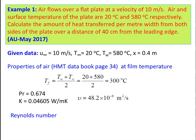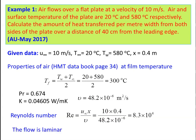Reynolds number for flat plate: Re = U∞·x / ν = 10 × 0.4 / (48.2 × 10⁻⁶) = 8.3 × 10⁴. Since Re < 5 × 10⁵, the flow is laminar.